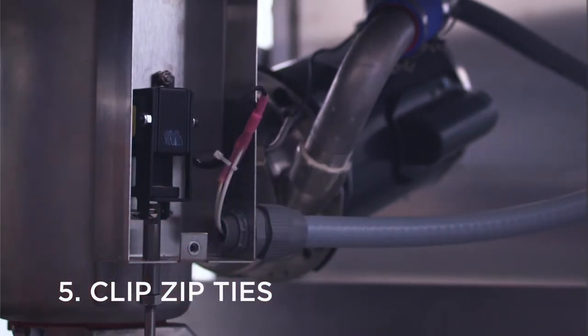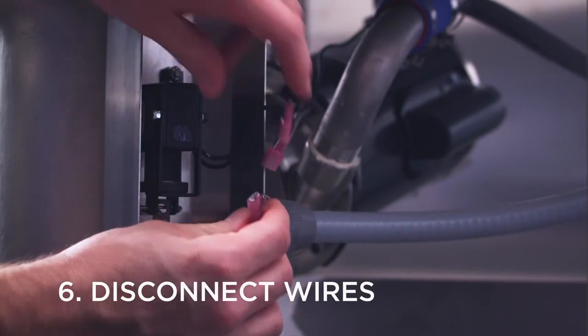Clip the zip ties to release the wires connected to the drain solenoid. Then, disconnect both wires.